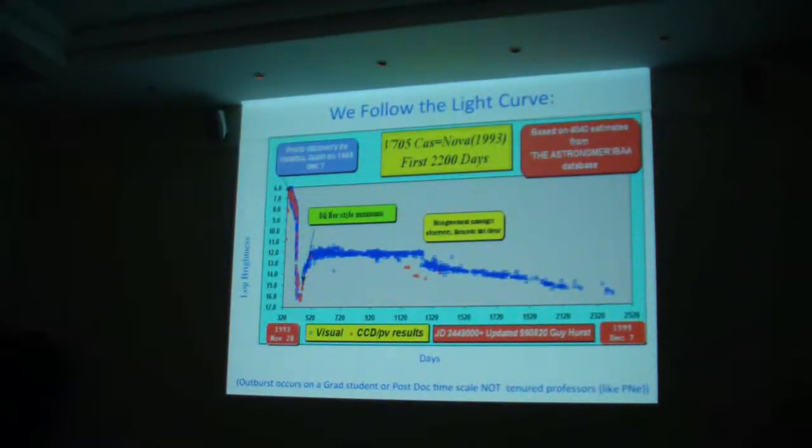So here's a light curve showing V705 Cas. Bright for 40 days and 40 nights before it formed dust and went into this very steep decline. In fact, this occurred over a few weeks. And we actually follow the formation of the dust with IUE. And then it recovers as the dust clears. It's generally only a one-time event. I should point out that for the graduate students and post-docs around, these outbursts take place on your time scale.